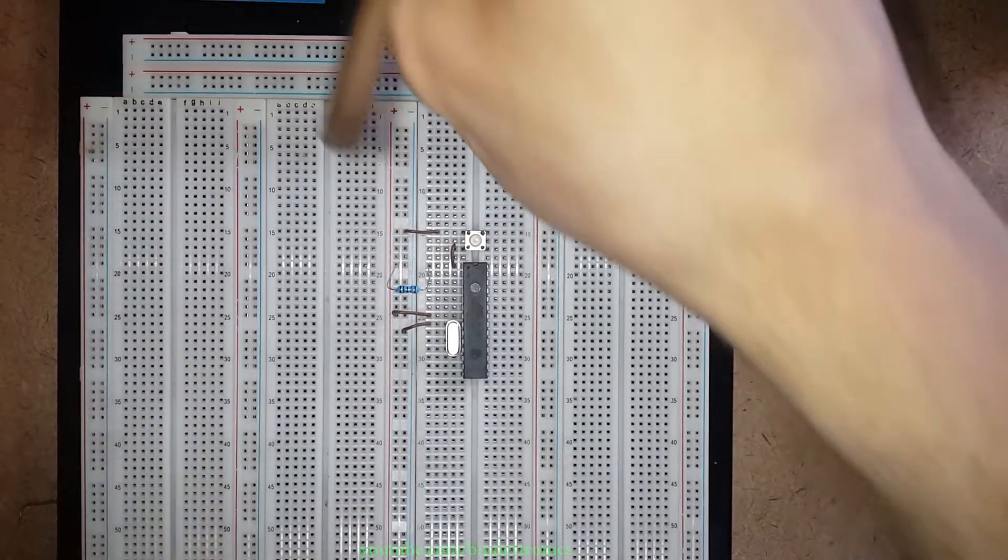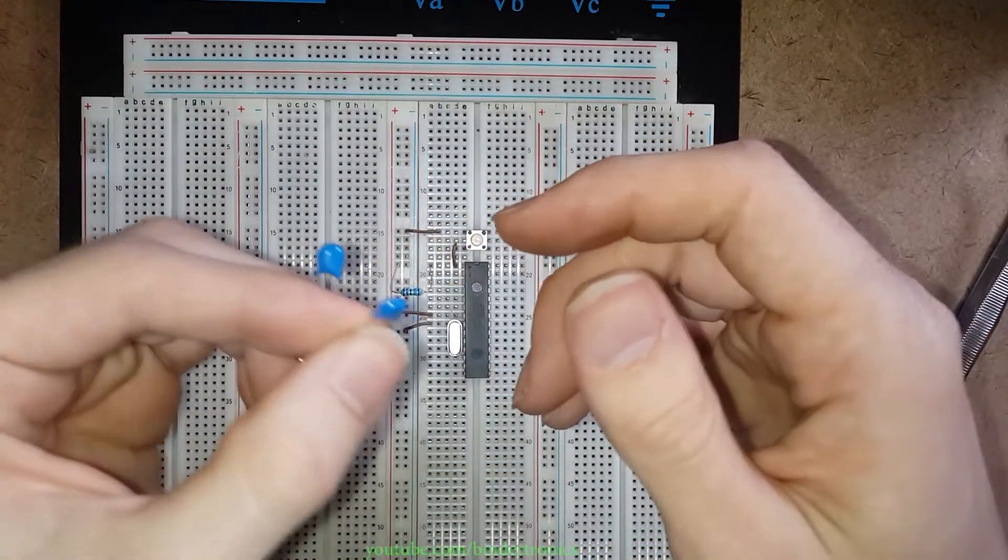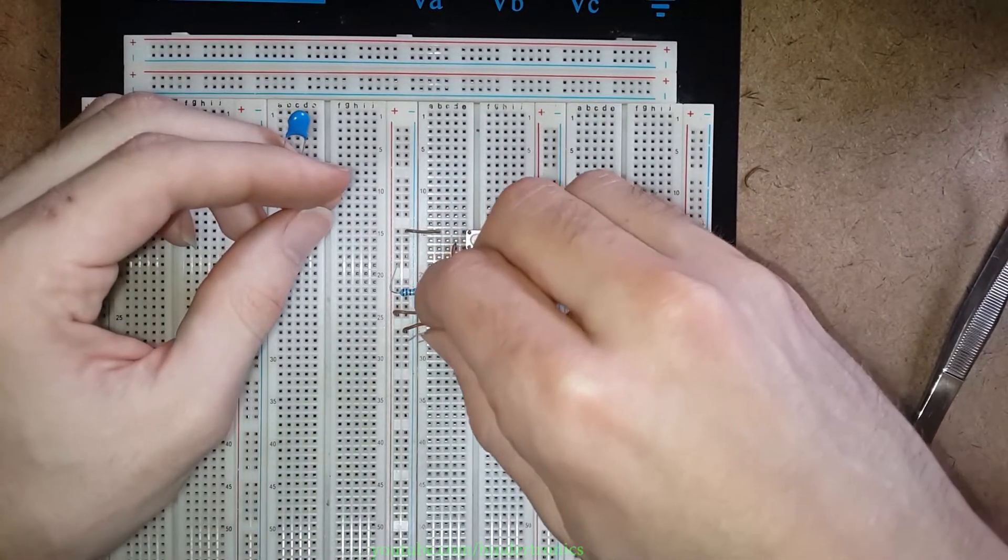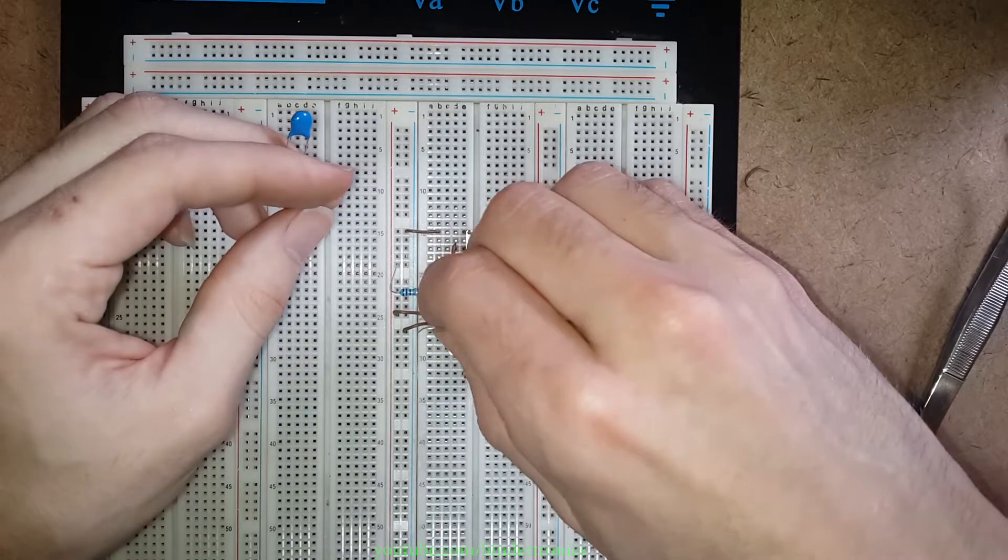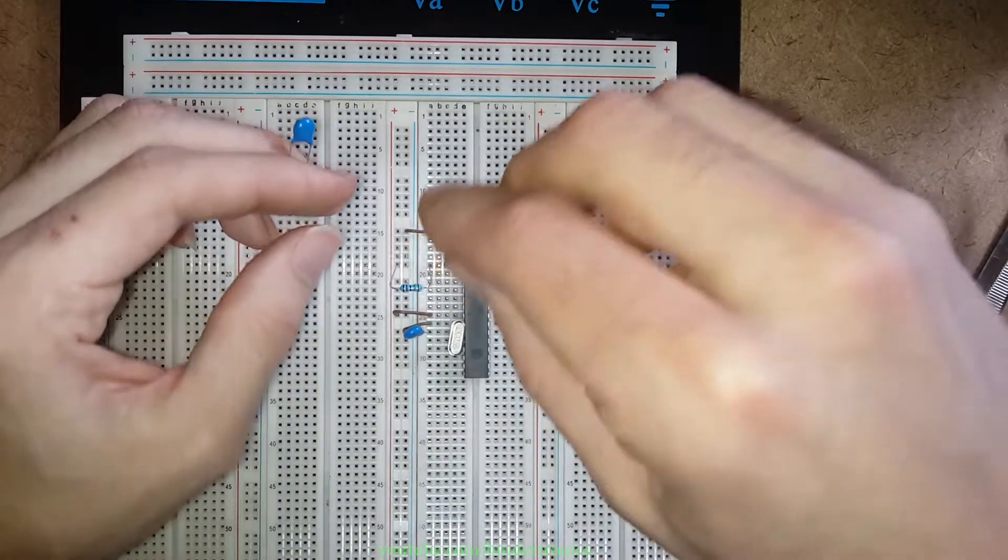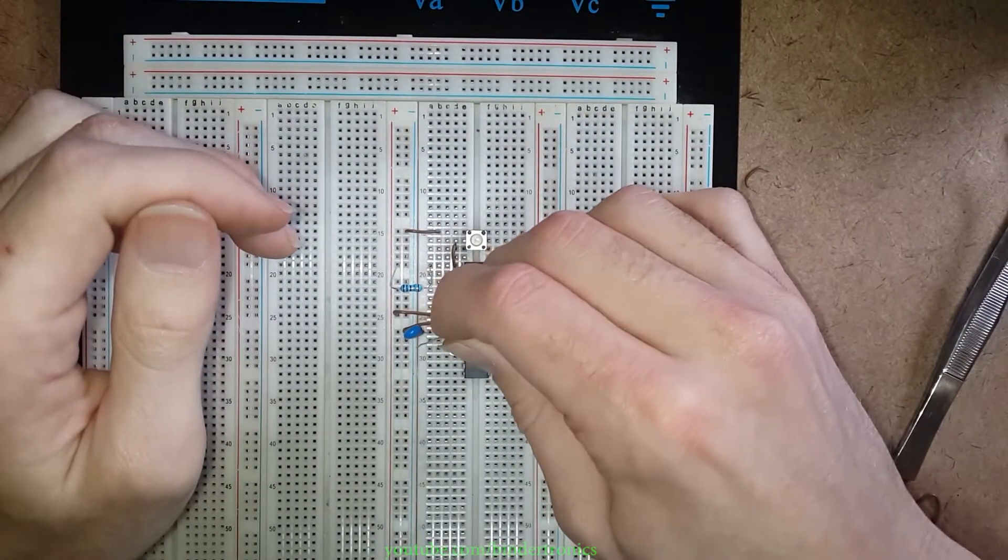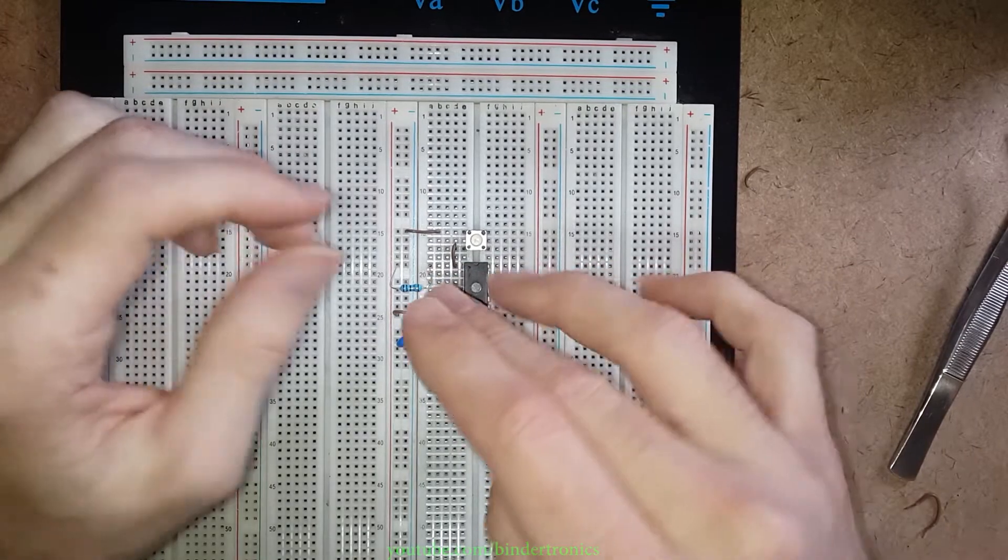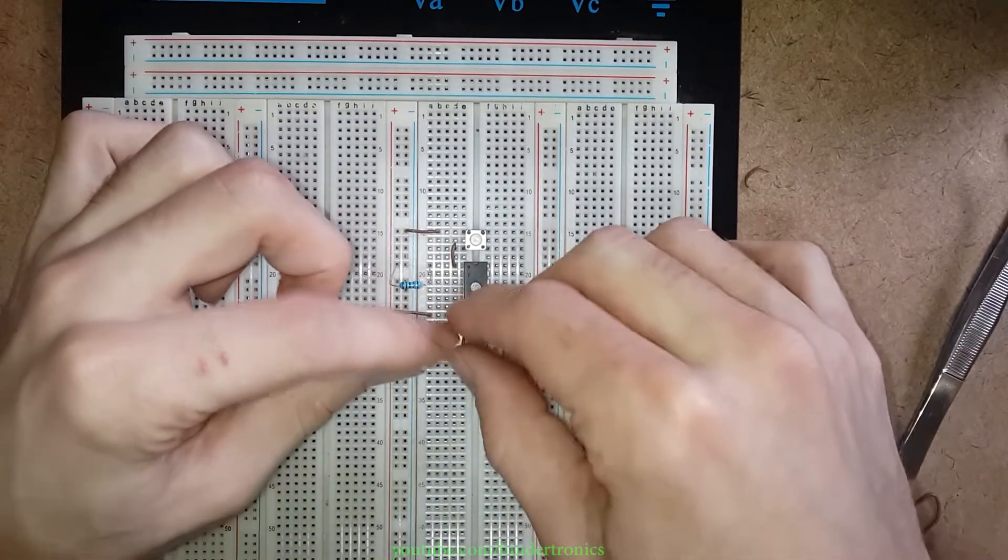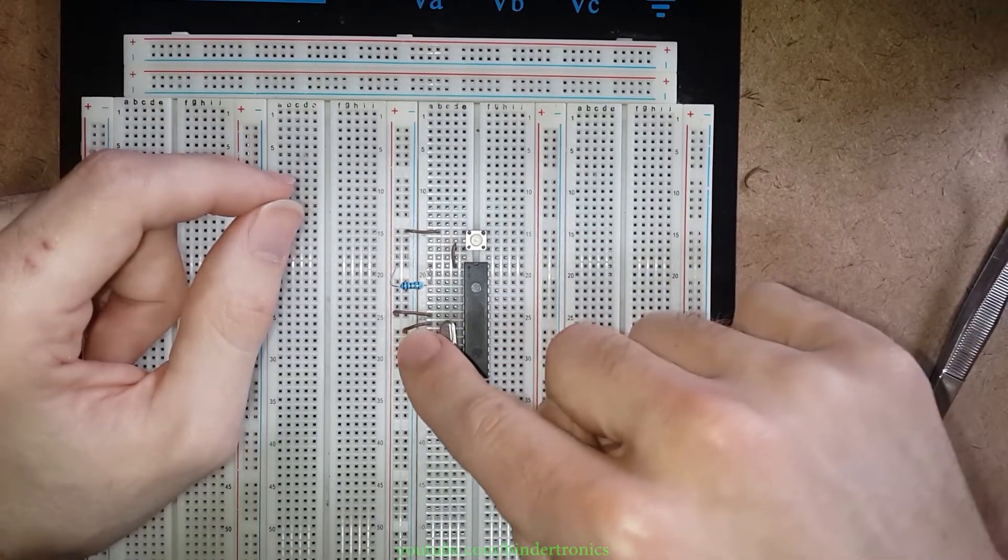Then we take 22 picofarad non-polarized capacitors. Then on each leg of the resonator we just bridge that to ground so that we load the crystal so it can start resonating and have a reference to ground. Because this is actually alternating current, so the cap is seen as a short.